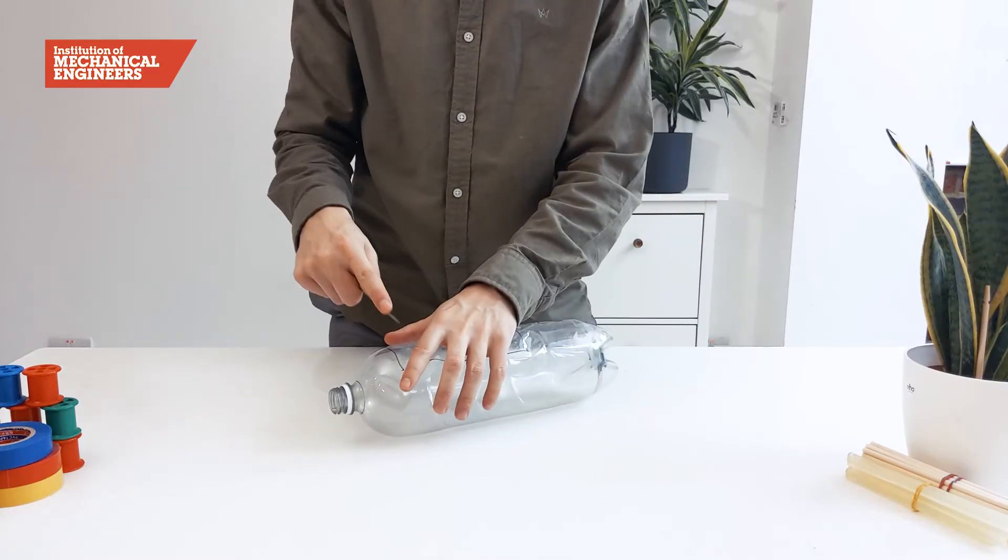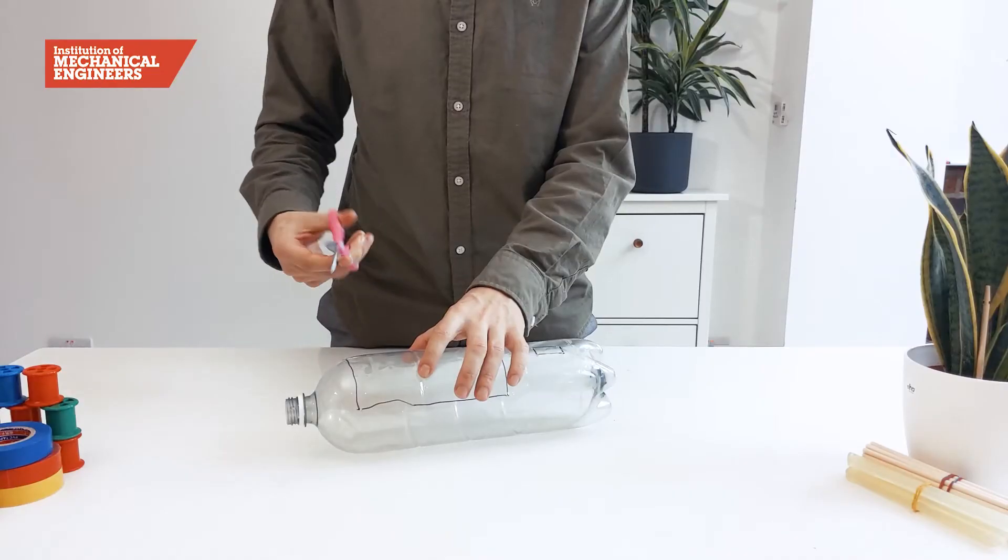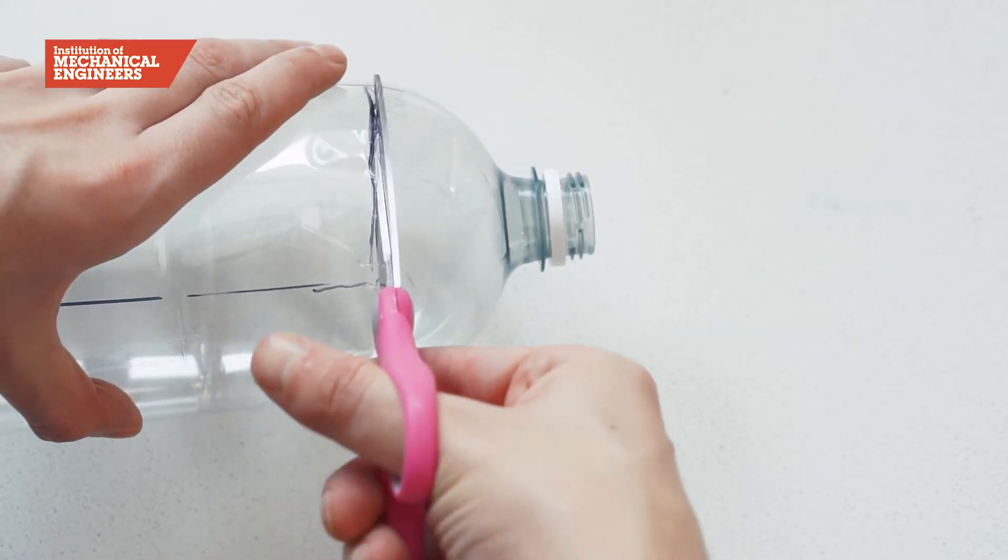Using a skewer or something sharp, make a hole in the bottle in the corner. Then, using a pair of scissors, cut along the lines as shown.